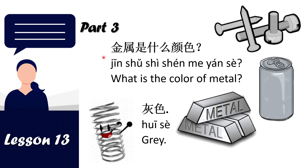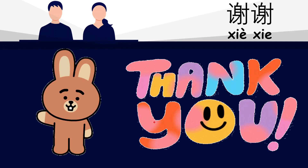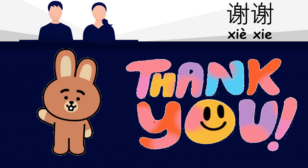Let's read together: 金属是什么颜色 — 灰色. 金属是什么颜色 — 灰色. That's all for today's lesson. I hope to see you guys again on our next lesson.